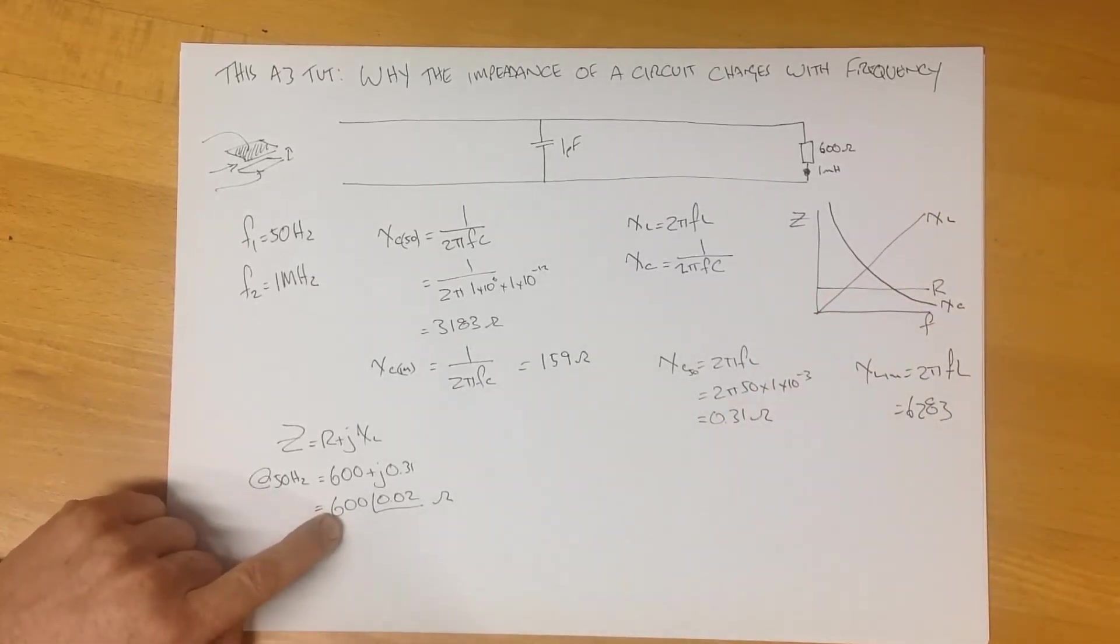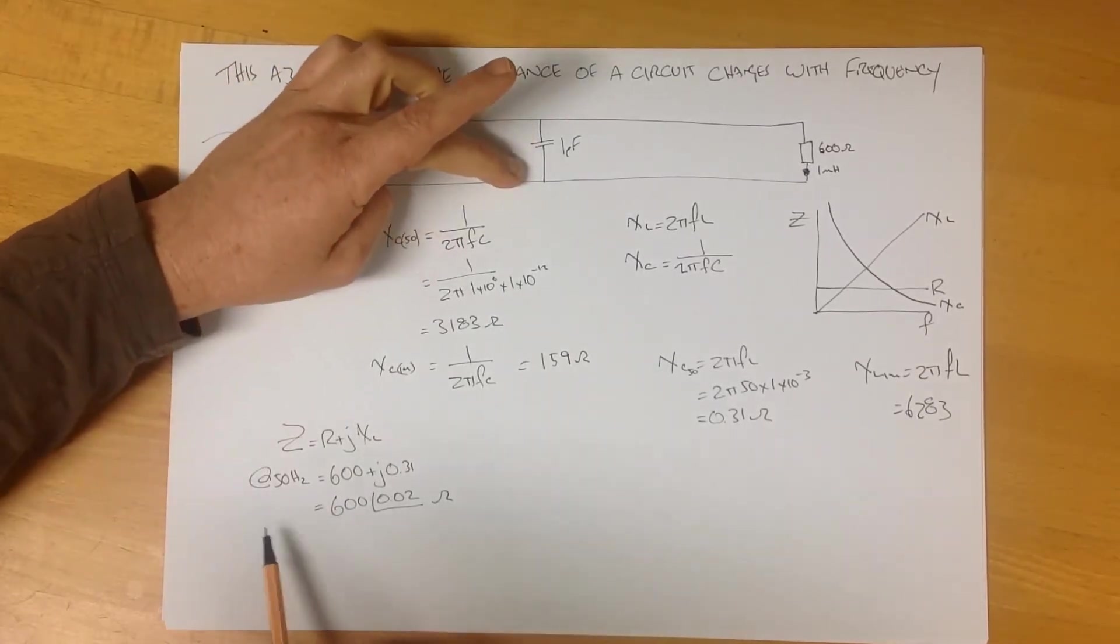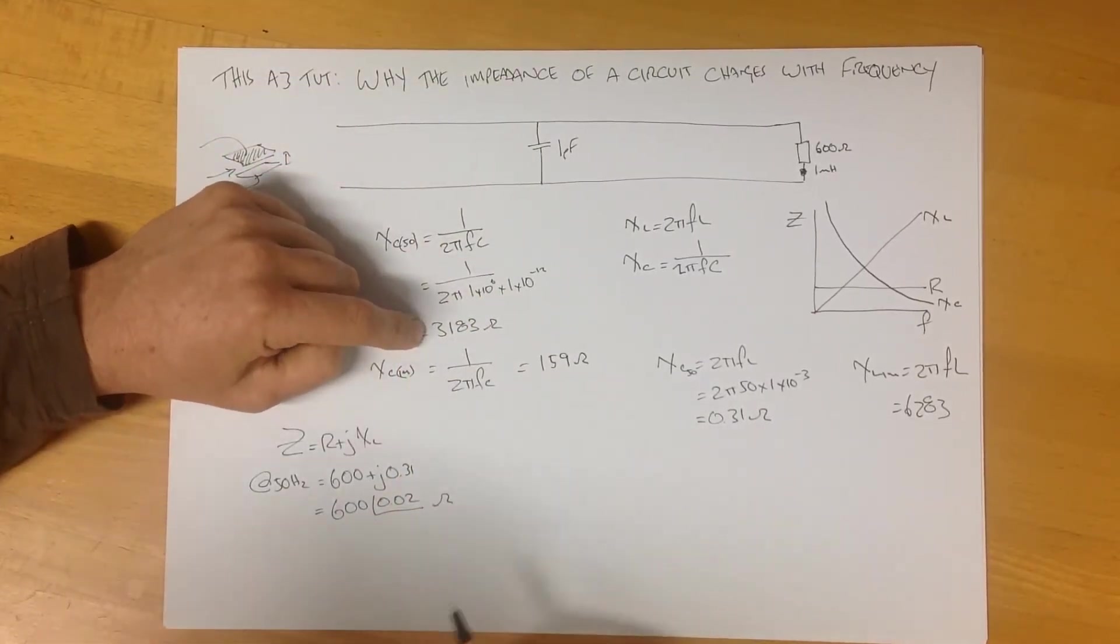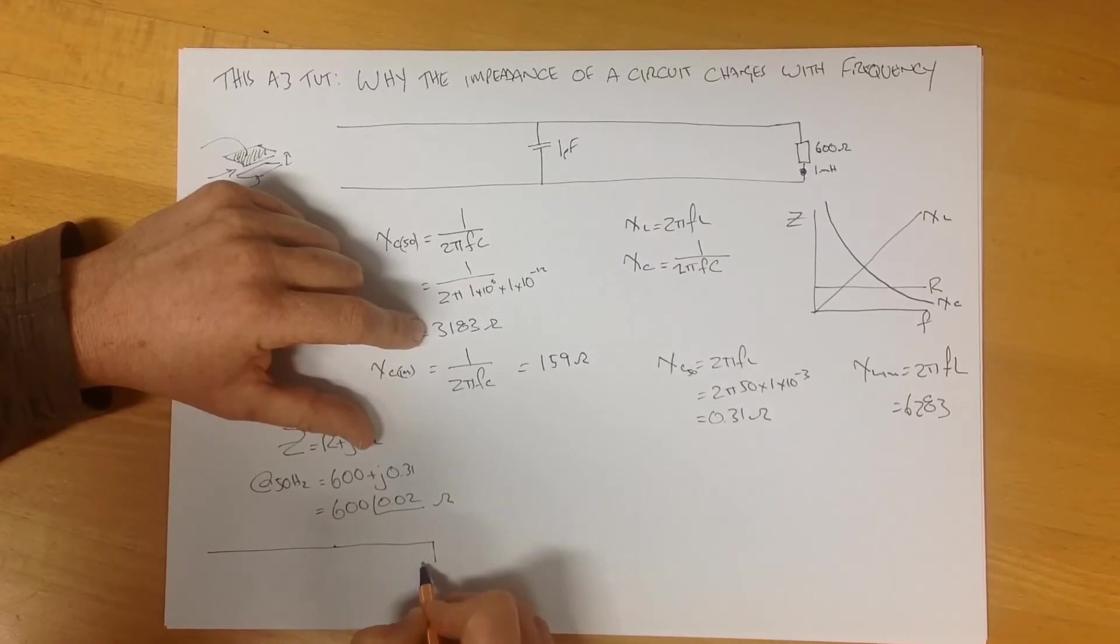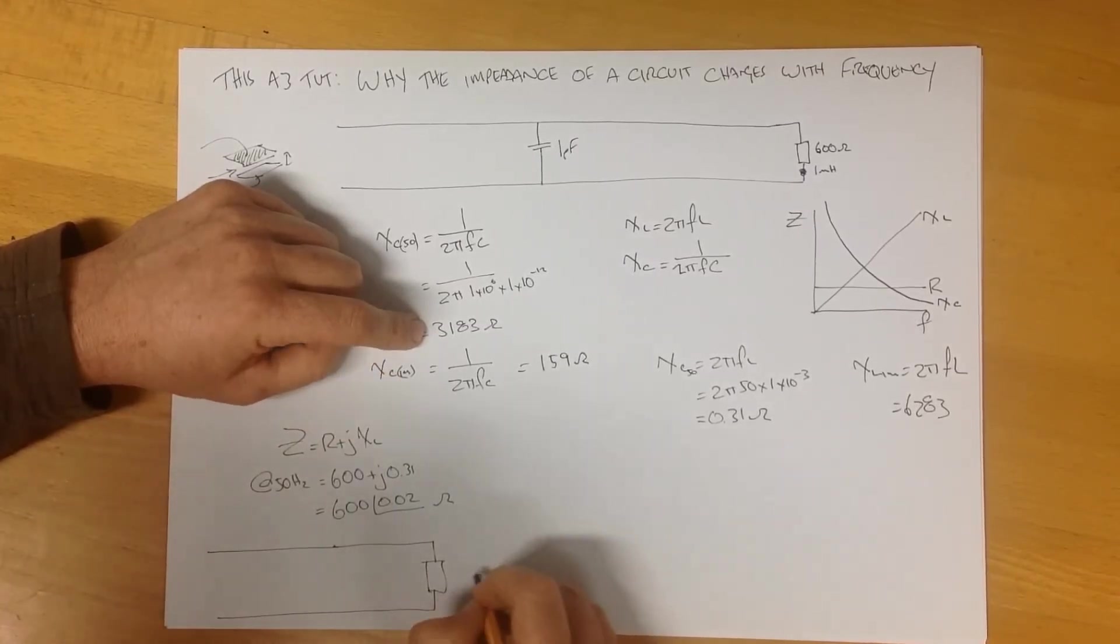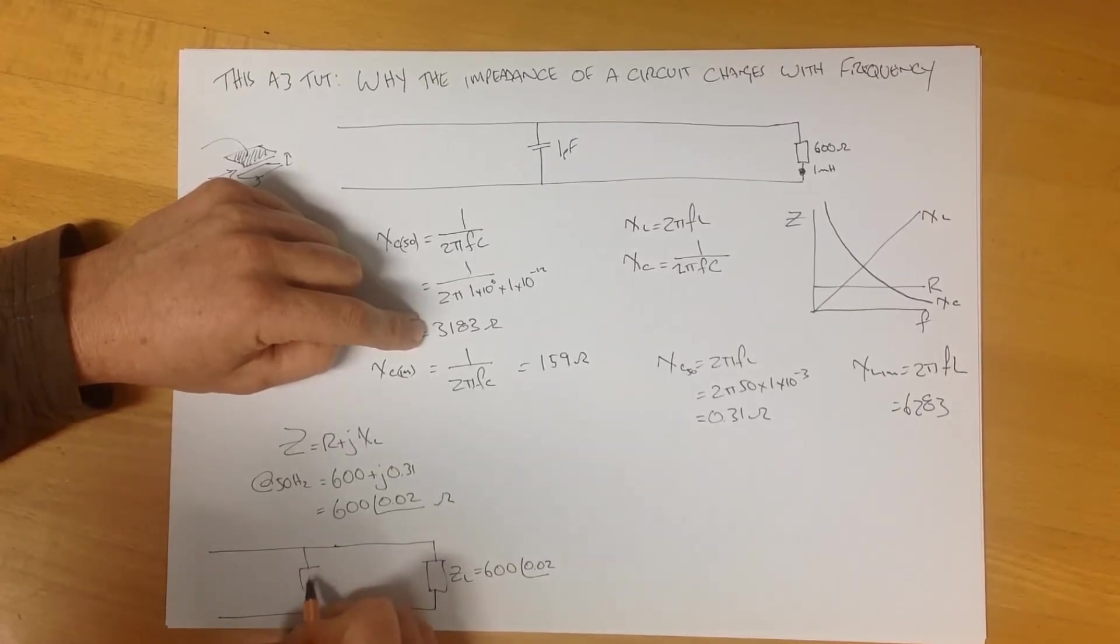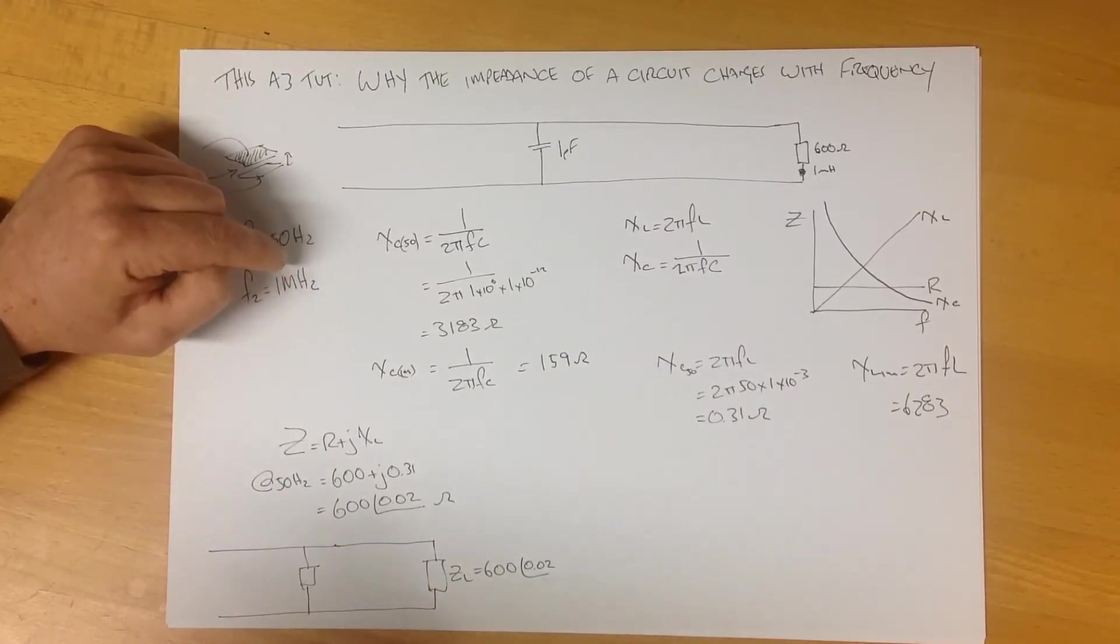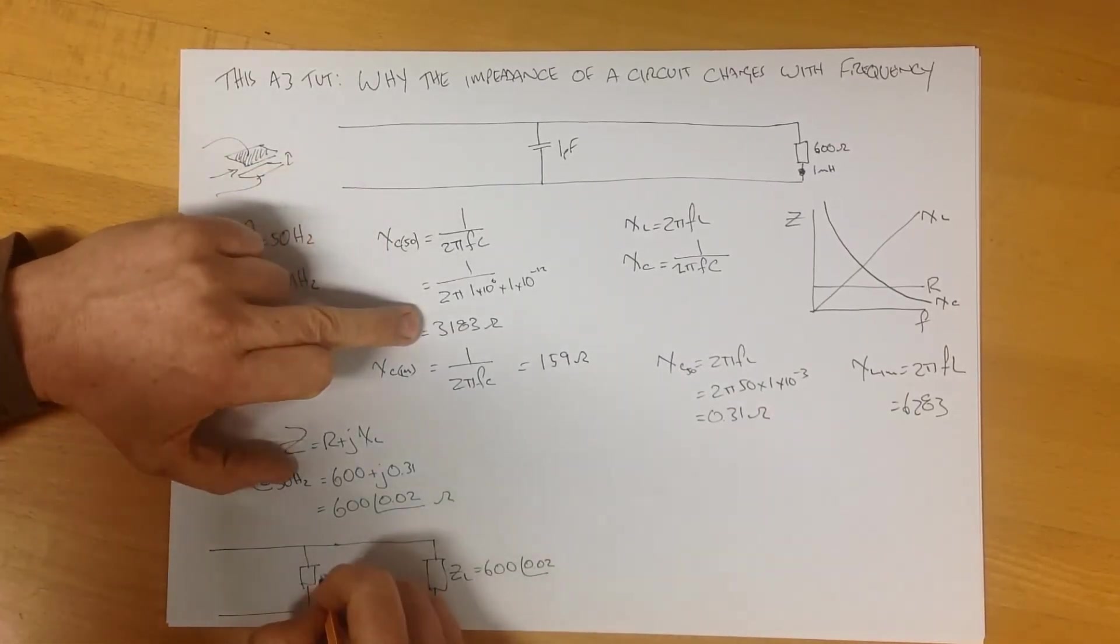Now, if we look at what's happening with our capacitor, we see that at 50 hertz, our capacitor reactance is 3,000 ohms. So our equivalent circuit here could be drawn as something like this. Our impedance here is 600 ohms and our impedance from our equivalent capacitance is 3,183.